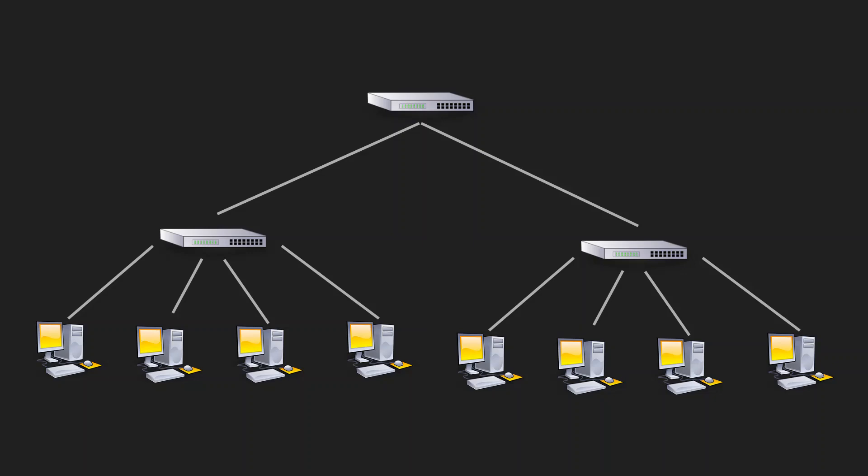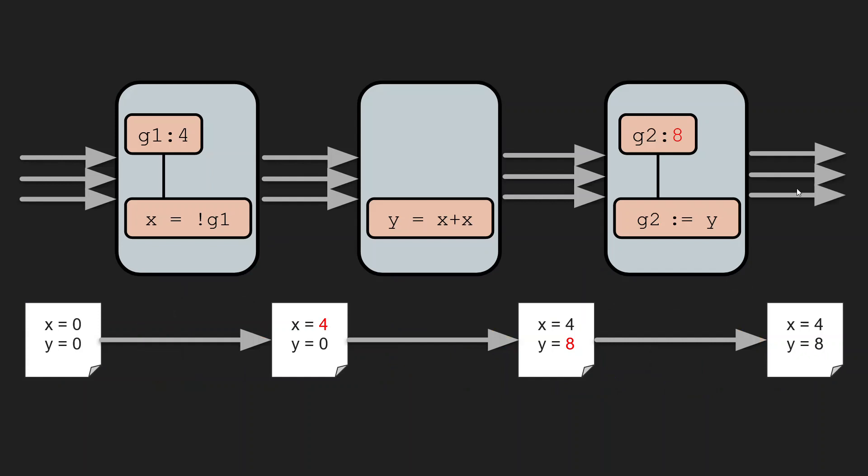However, in order to achieve their high speeds, network switches have overwhelmingly adopted a pipelined architecture, in which network packets are processed from left to right by a series of discrete pipeline stages, each of which performs only a small amount of computation.